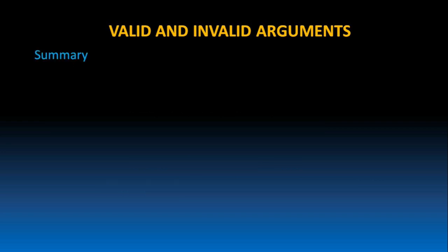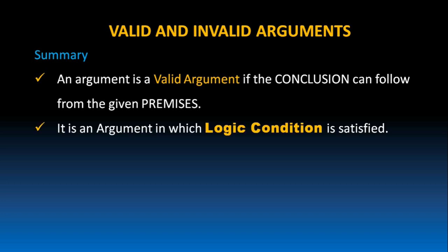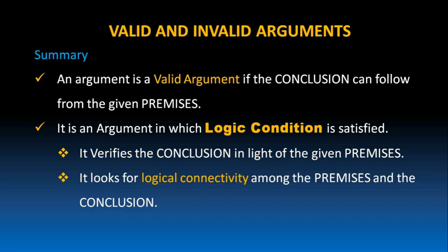Now let's go through a summary on valid and invalid arguments. An argument is valid if the conclusion can follow from the given premises. It is an argument in which the logic condition is satisfied. It verifies the conclusion in light of the given premises and looks for logical connectivity among the premises and the conclusion.